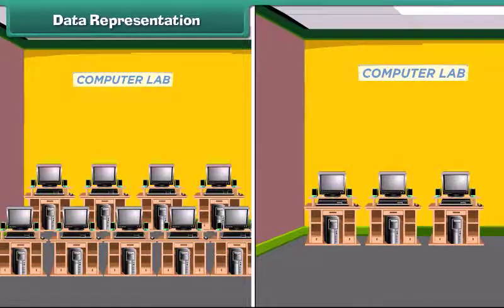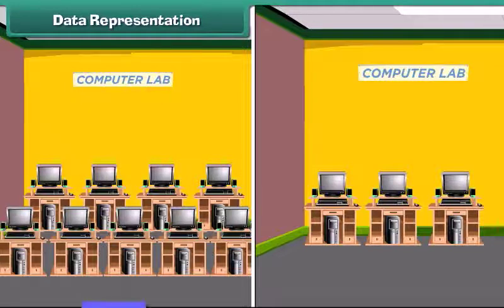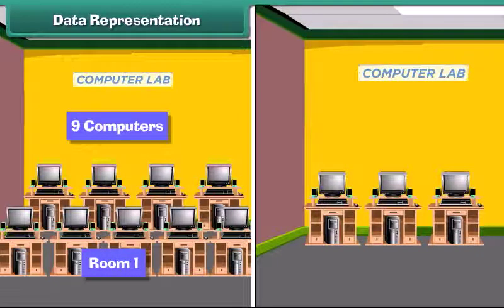Look at the diagram that shows the arrangement of computers in your computer school. Look at the plan and then answer the questions that follow. How many computers are there in room 1? There are 9 computers in room 1.